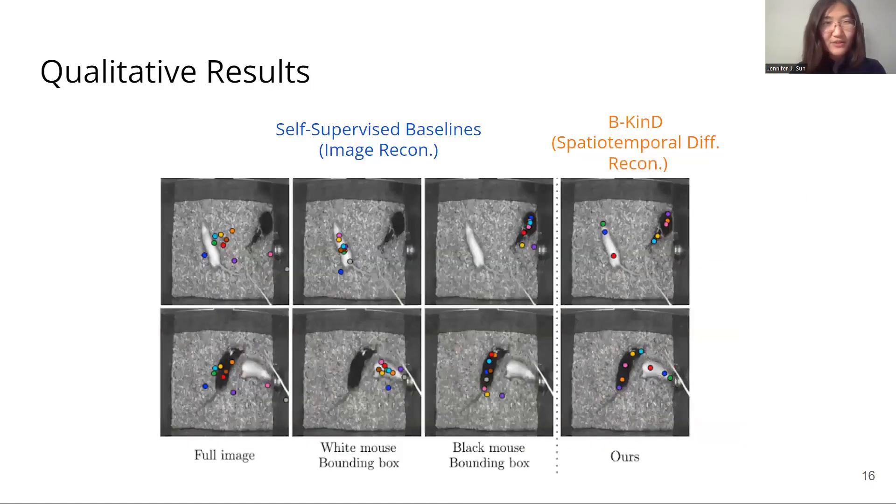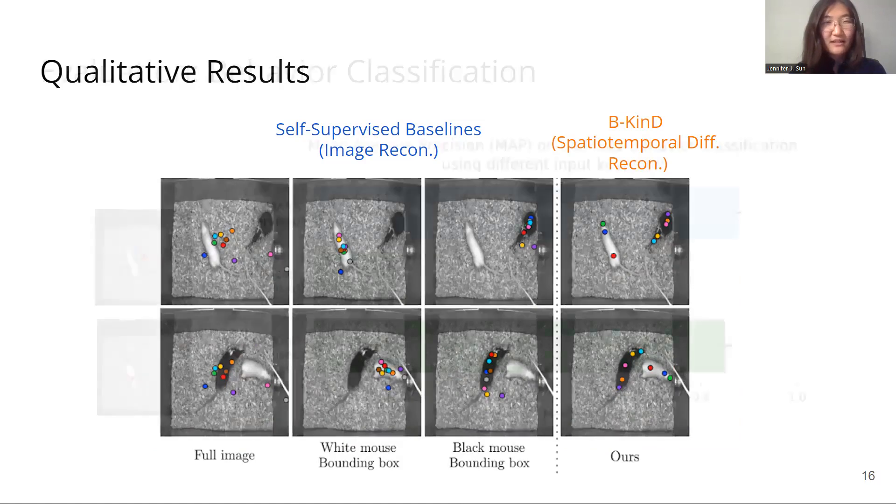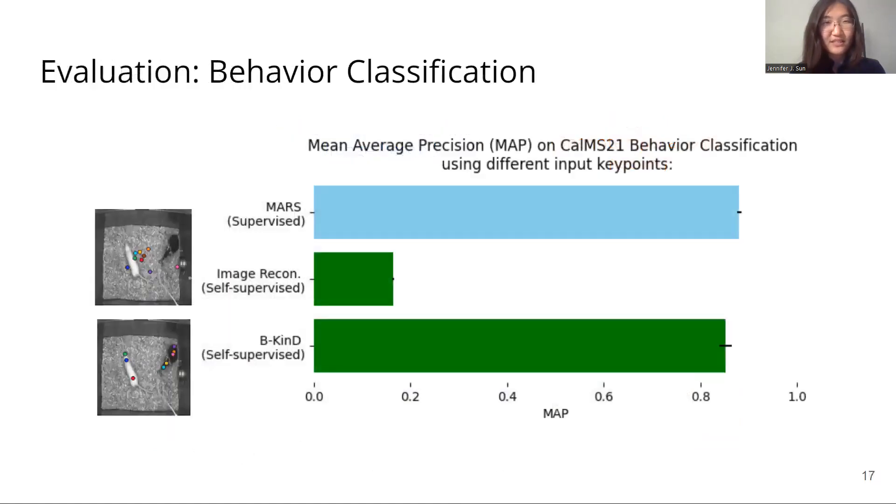Comparing our spatial temporal difference reconstruction to image reconstruction, we see that the keypoints discovered by our model qualitatively tracks parts more consistently. Additionally, for downstream behavior classification, our keypoints are quantitatively comparable to supervised keypoints trained on this dataset.